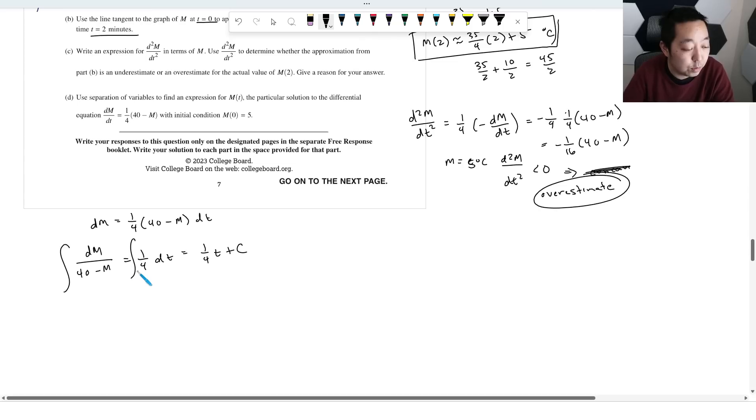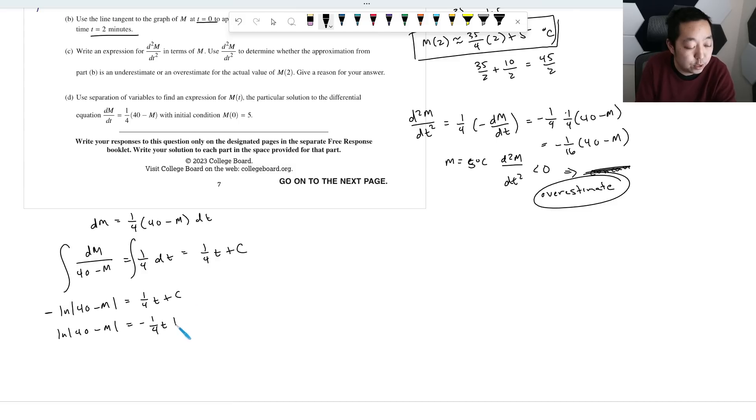This right side is going to be one fourth T plus C. That one's pretty easy because it's just a constant. This one, you can either do a U substitution or just recognize it's going to be some kind of LN of 40 minus M. But it's going to be negative because when I take the derivative of this, I'm going to multiply chain rule. I'm going to multiply by negative one. So I need a negative to offset that. Multiply through by negative one, negative one fourth T, negative one times some arbitrary constant is just some arbitrary constant. We do E to the both sides to get rid of the natural log equals E to the negative one quarter T plus C.